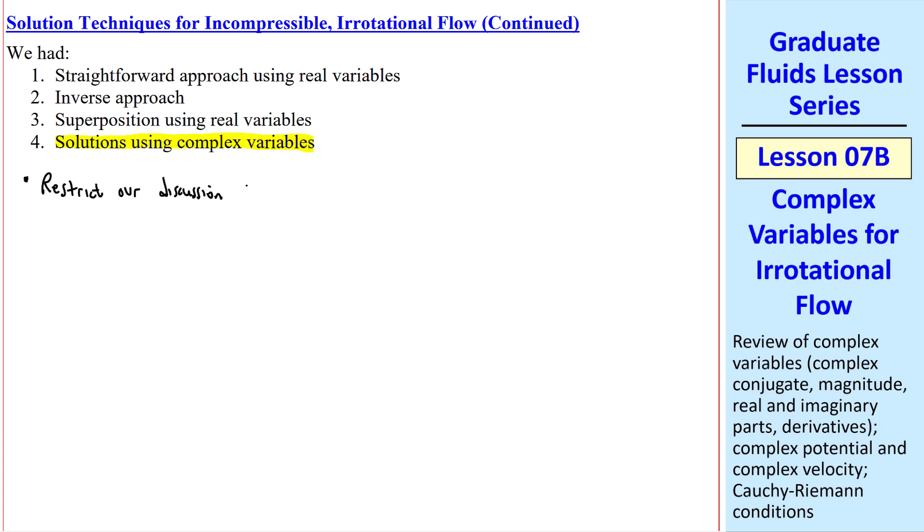We restrict our discussion to 2D incompressible irrotational flows. In some previous lessons, we were able to write u as del phi del x, where phi is the velocity potential, or del psi del y, where psi is the stream function. And similarly for v, v equal to del phi del y, or negative del psi del x.